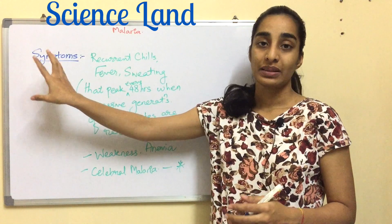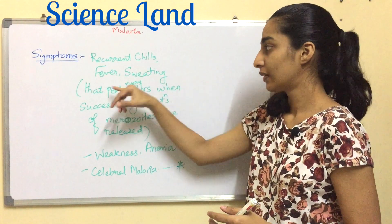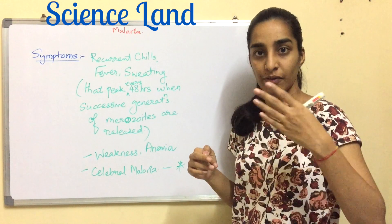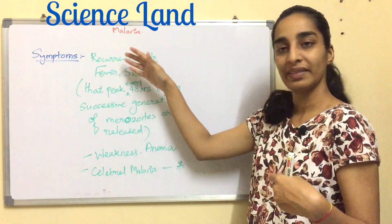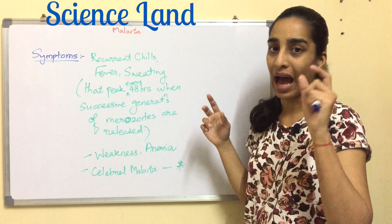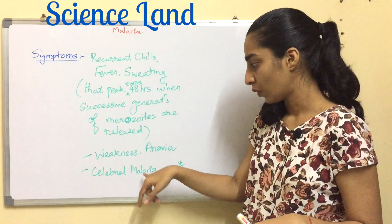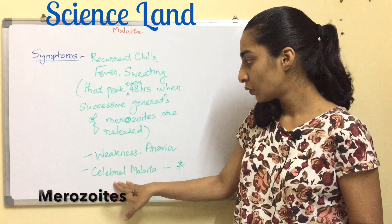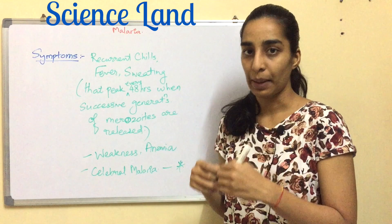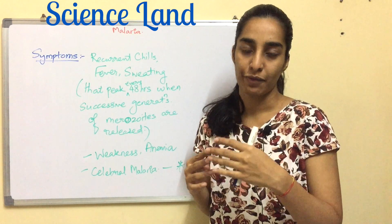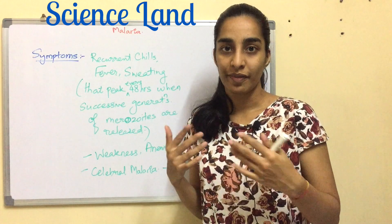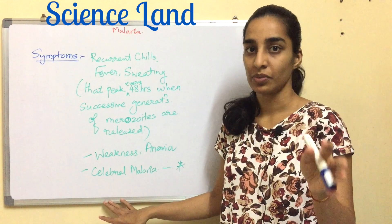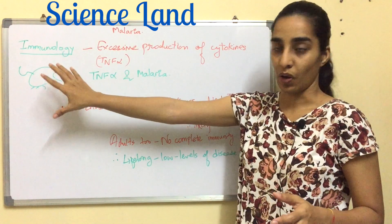Symptoms of malaria include recurrent chills, fever, and sweating every 48 hours — occurring each time a new generation of merozoites is released. The RBCs are infected and ruptured, causing anemia and weakness. There is also cerebral malaria, caused by merozoites blocking the capillaries, leading to intense headache, renal failure, heart failure, and cerebral damage.